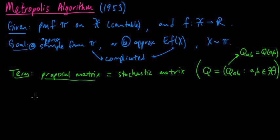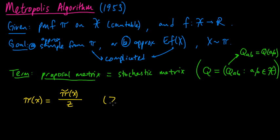An important note before the algorithm: oftentimes we won't be able to efficiently compute π(x) for any given x, but we can compute π̃(x), where π̃ is proportional to π and Z is some positive normalizing constant. The Metropolis algorithm doesn't require us to compute π(x) — it only requires π̃(x). That's a very nice feature, because computing Z, even though in principle we know π̃, can be very computationally difficult.